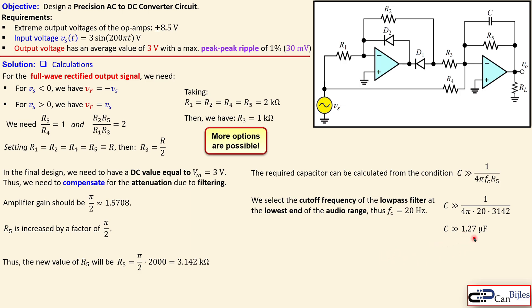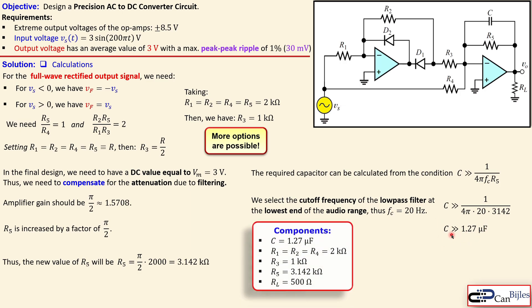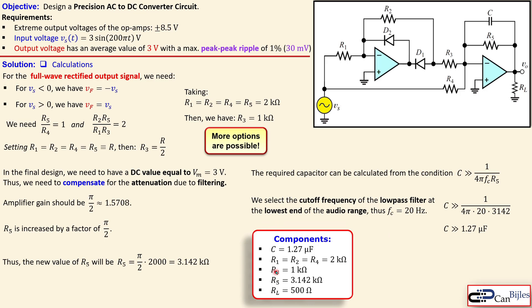In practice you would take a capacitor 100×, 50×, or 20× larger to make the filtering more effective. We will see what effect these values have in our circuit. The component summary so far: C = 1.27 μF, R1 = R2 = R4 = 2 kΩ, R3 = 1 kΩ, R5 = 3.14 kΩ, and a load of 500 Ω has been chosen.